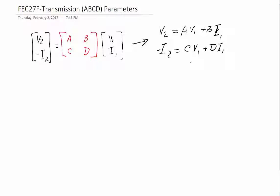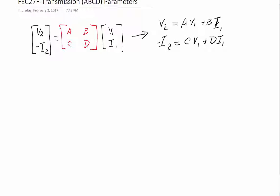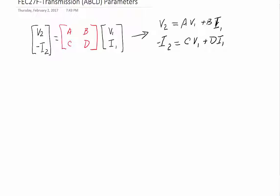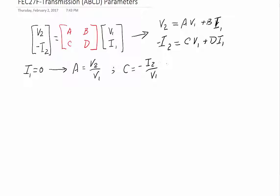Once again we can apply what we learned before. The easiest way to find the parameters: if I1 is zero, then we can calculate A as V2 over V1, and from the second equation we can calculate C as minus I2 over V1. A is unitless; C is in Siemens, sometimes represented with an S or sometimes with an upside-down omega called mhos.